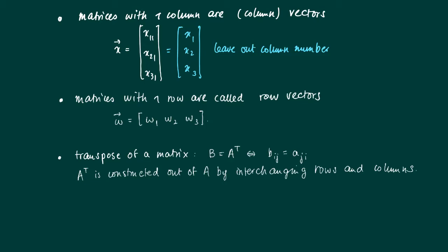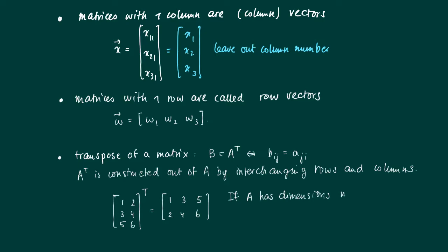For example, take a matrix A with rows 1, 2, 3 and 4, 5, 6. Then its transpose: the first column 1, 3, 5 becomes the first row, and the second column 2, 4, 6 becomes the second row in the new matrix. So we see that if A has dimensions m times n, then the transpose A^T has dimensions n times m.